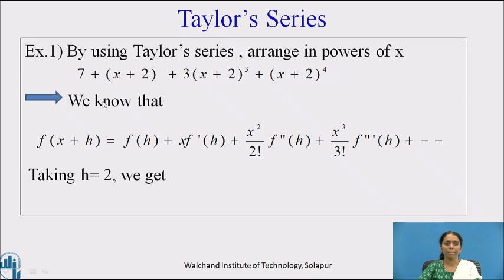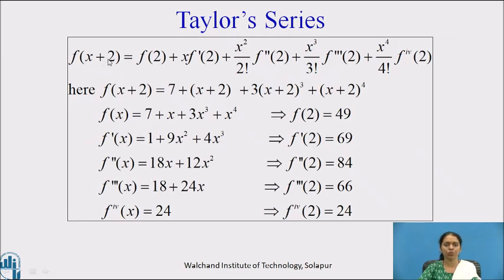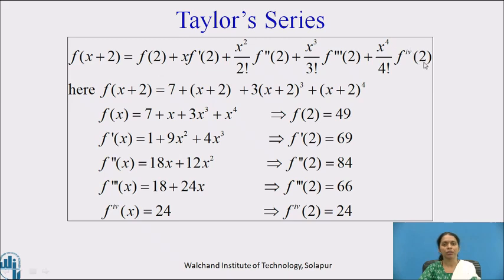By comparing the term x+h with x+2, we get h = 2. So f(x+2) in expanded form becomes f(2) + x·f'(2) + (x²/2!)·f''(2) + (x³/3!)·f'''(2) + (x⁴/4!)·f⁽⁴⁾(2).